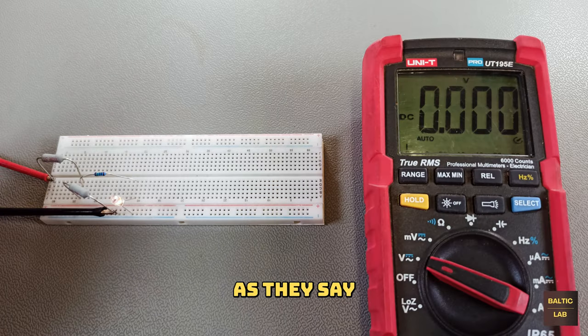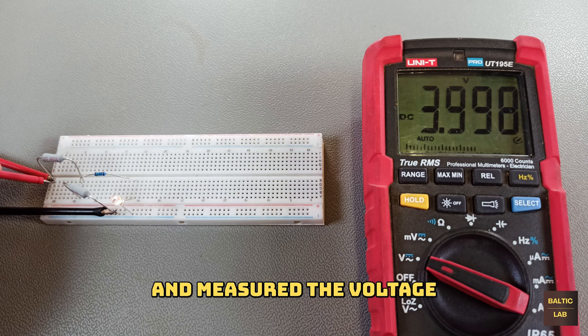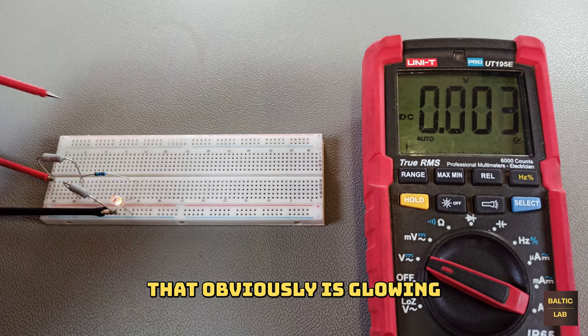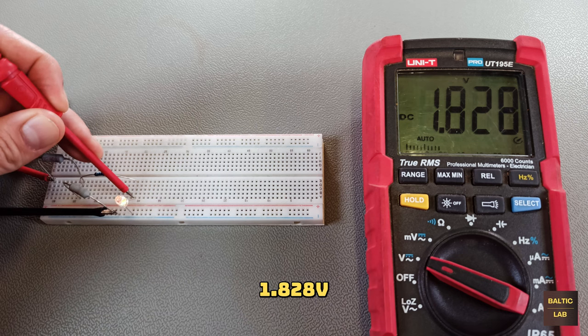Trust but verify as they say. So I built up the circuit, applied 4 volts and measured the voltage across the LED that obviously is glowing though fairly dimly, and what do we get? 1.828 volts, almost exactly what we predicted.